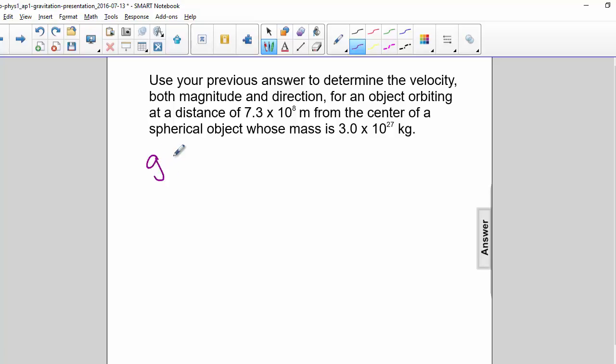Our previous answer was g equals 0.38 meters per second squared. So we can use v is equal to the square root of gr.